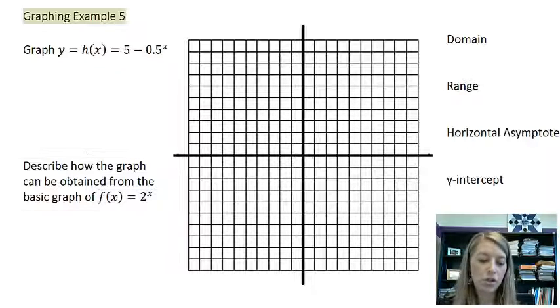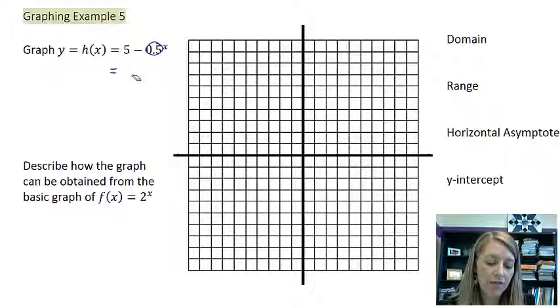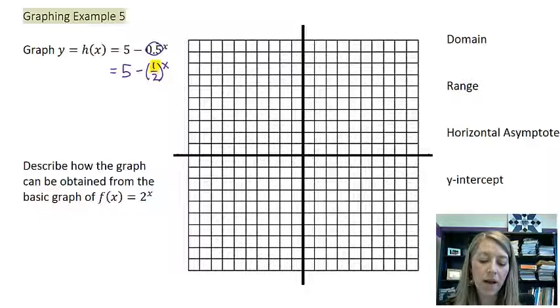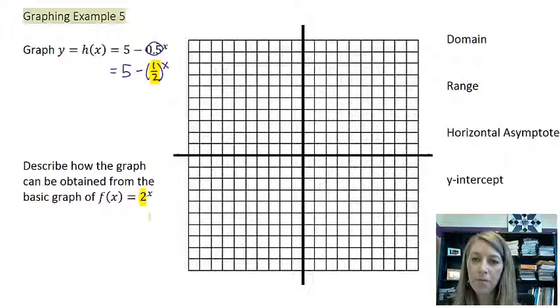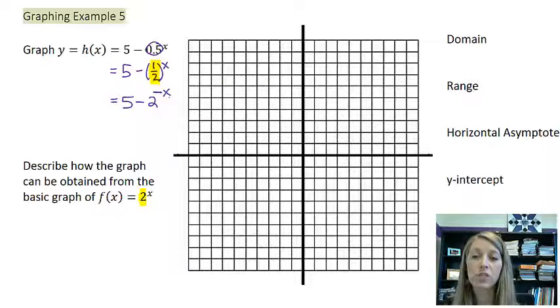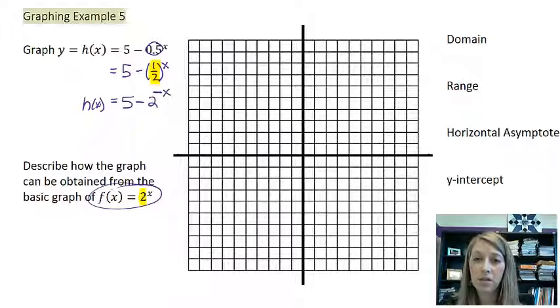We need a little bit of manipulation here. The first thing I'm going to do is change this decimal into a fraction. So I have 5 minus 1/2 to the x. Now I know that I can rewrite this in the form of 2 by flipping the fraction. What math is going to resemble flipping a fraction? That is a negative exponent. So I can write this as 5 minus 2 to a negative exponent, and of course my exponent is x. Now it should be much easier to figure out how this h(x) can be obtained from my basic function here.